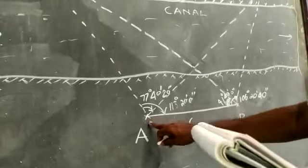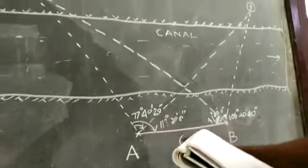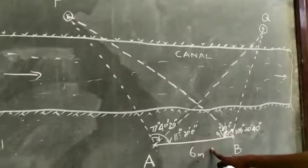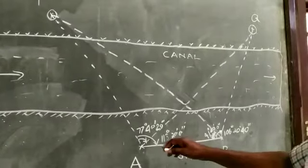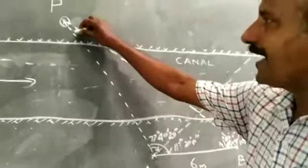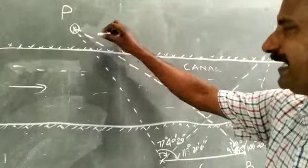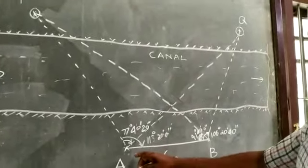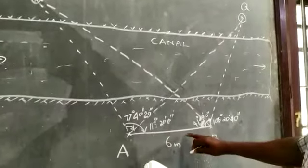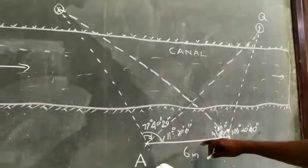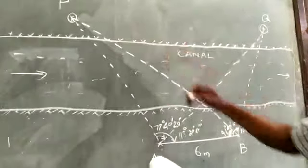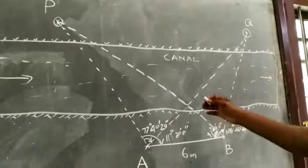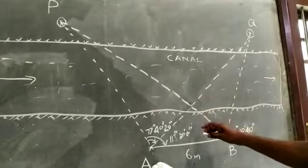And this distance, distance AB, baseline distance is 6 meters. From these data, we can calculate angle P and angle Q, and you can find out the distances AP and BQ by using sine theorem.